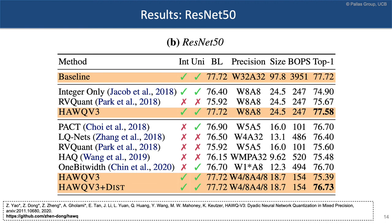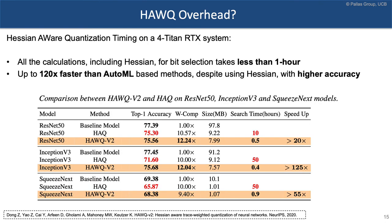Importantly, all bit precision settings are completely automatic. A key question is: what is the overhead of computing that curvature? It's very fast because you can use matrix-free methods to calculate the curvature. We tested this on a four-GPU Titan RTX system — not a supercomputer or DGX — and all calculations including the Hessian trace take less than one hour for ImageNet.